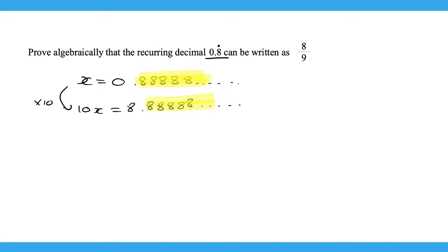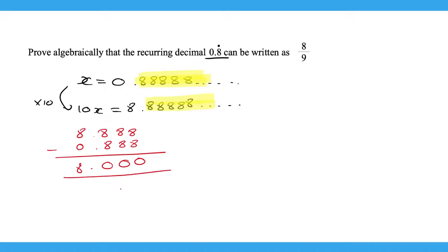So we can do 8.888 subtract 0.888, and that's going to give you an answer of 8. So we have done 10x subtract x and we've got 8. And what is 10x subtract x? That's 9x. So 9x is therefore equal to 8.